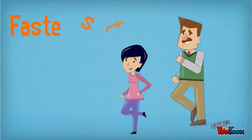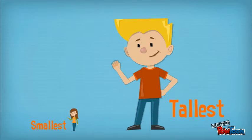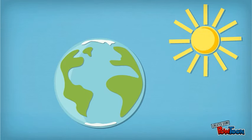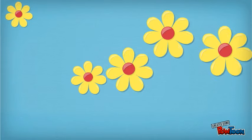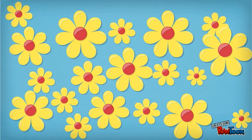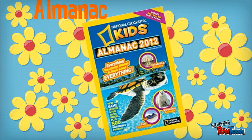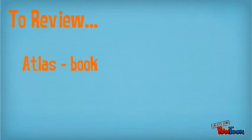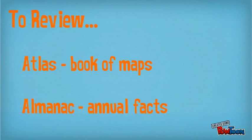So if you want to know quick facts like the fastest or the smallest or tallest, or when the sun rises and sets, or when the best time to plant a crop is, then you need an almanac. To review: an atlas is a book of maps that shows you where things are at, and an almanac gives you all kinds of quick facts.